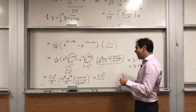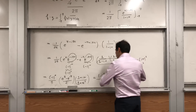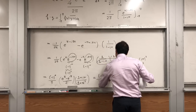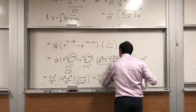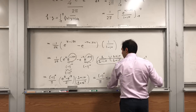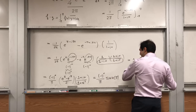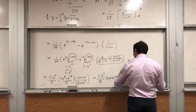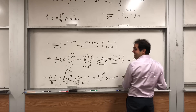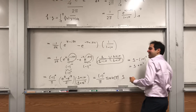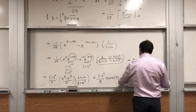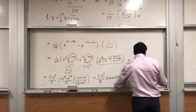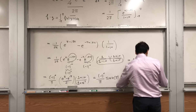So Cn equals minus 1 to the n over pi times sinh of pi times (1 plus in) over (1 plus n squared).